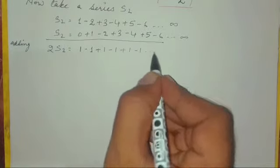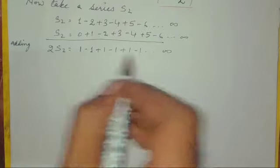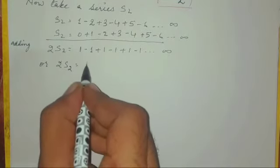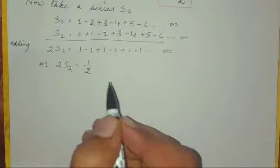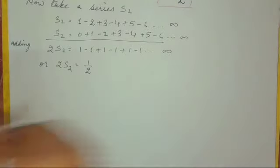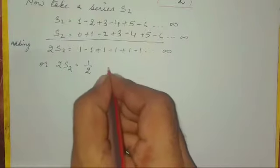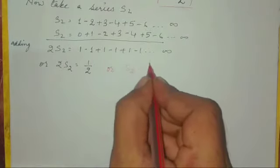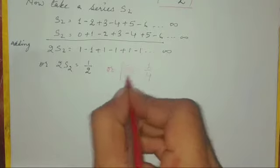Two times S2 will give 1 by 2, because we know that 1 minus 1 plus 1 minus 1 is 1 by 2. So here, S2 is actually equal to 1 by 4. This is the term we have to use to prove Ramanujan's infinite series. So S2 is equal to 1 over 4.